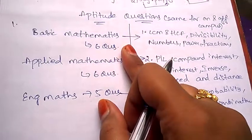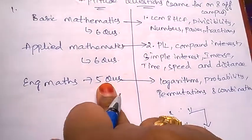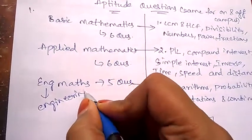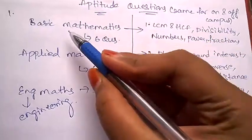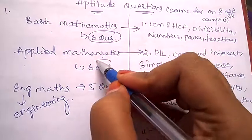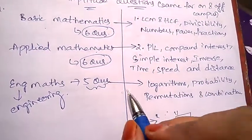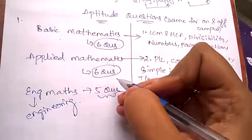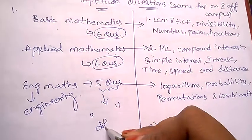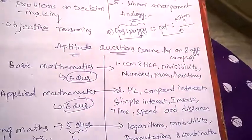Coming to Accenture aptitude, there will be three different sections: basic mathematics, applied mathematics, and engineering mathematics. Under basic mathematics, six questions will be asked. Under applied mathematics, six questions will be asked. Under engineering mathematics, five questions will be asked. Out of these three, engineering mathematics is a little difficult under this aptitude. Remember that, and concentrate more on engineering mathematics.